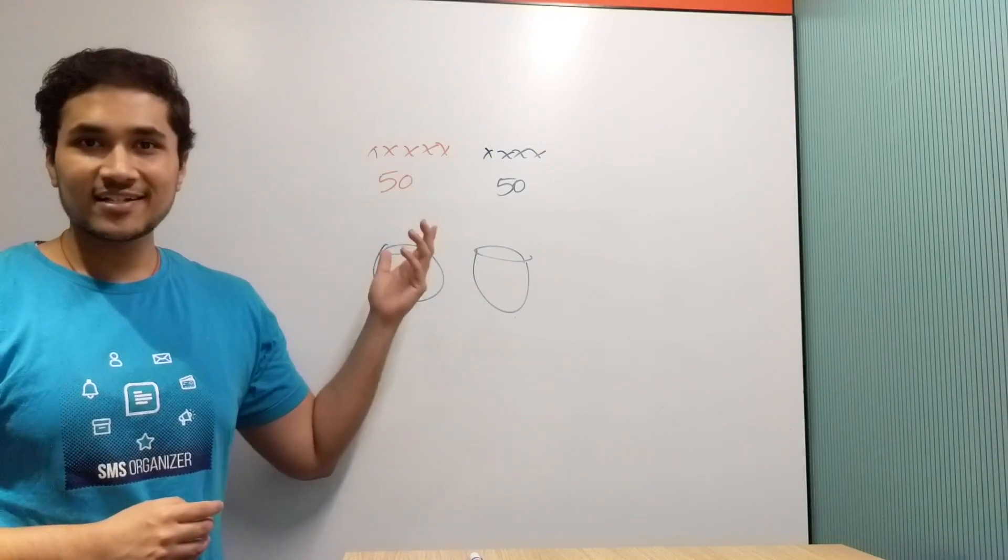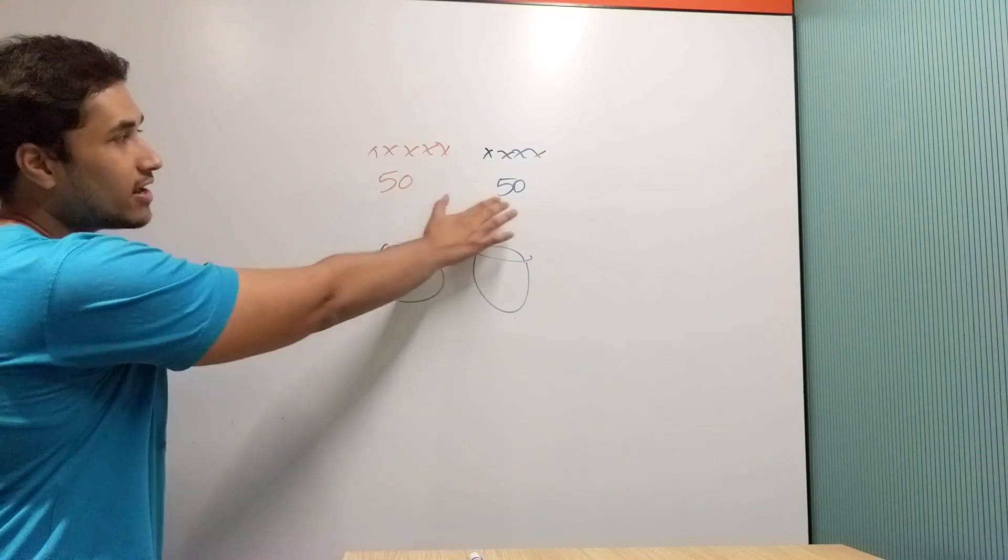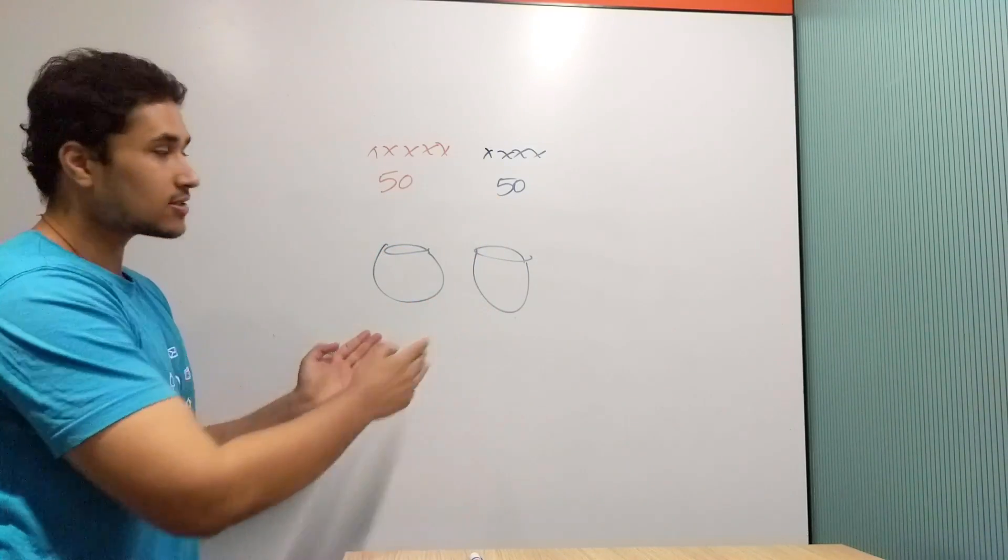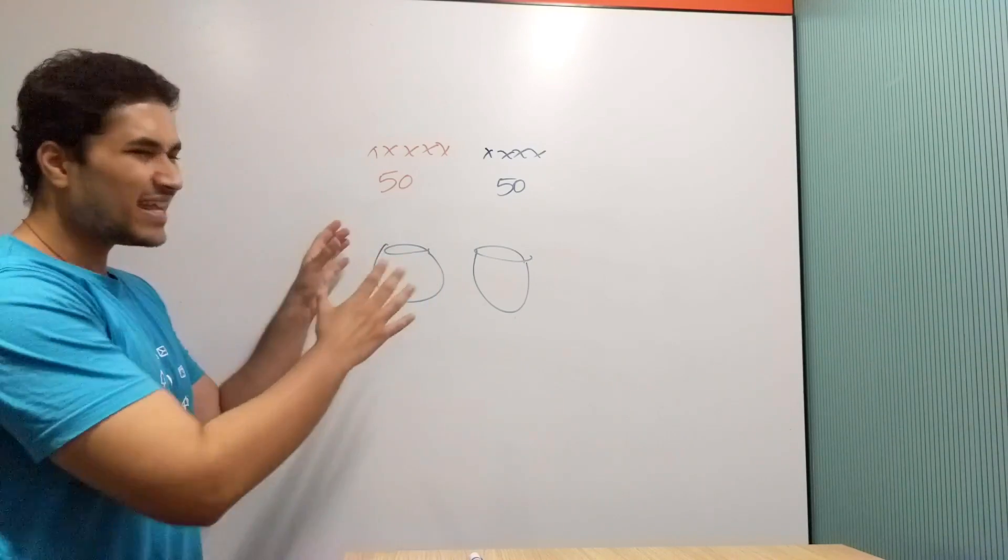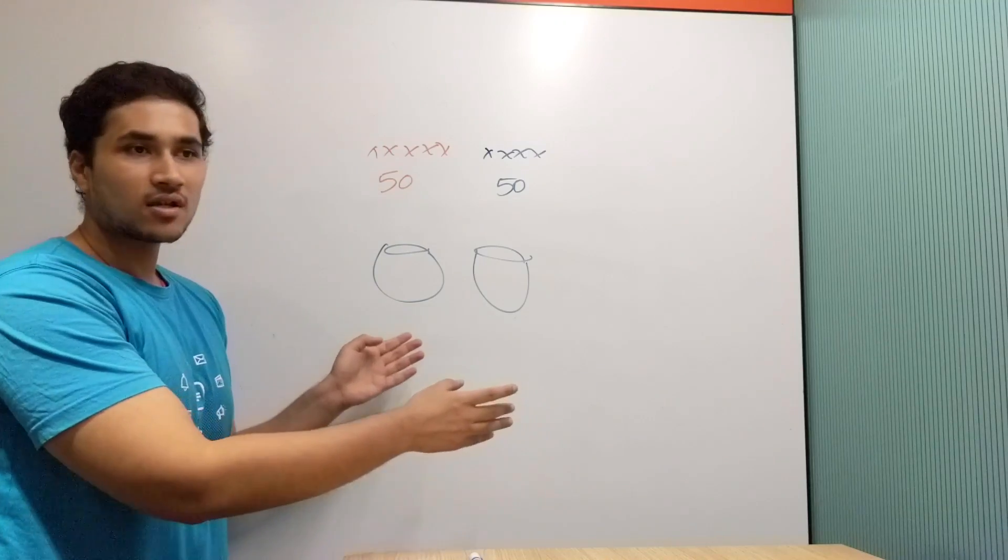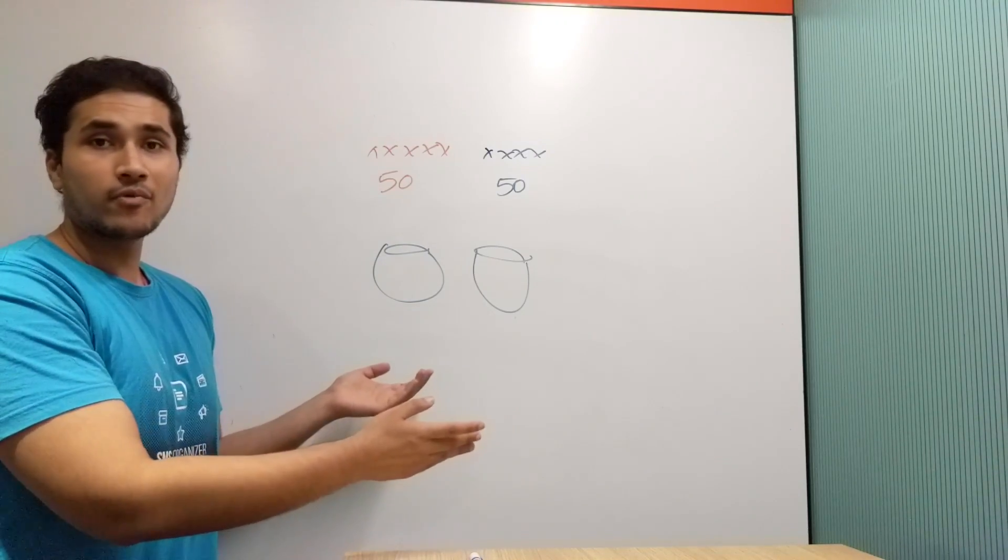So we have 50 red chits and 50 blue chits right over here as you can see, and we also have two jars.